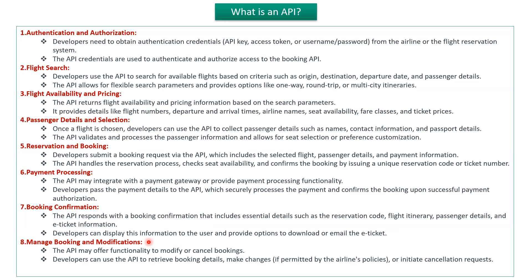The eighth one is the manage booking and modifications API. This API offers functionality to modify or cancel bookings. Developers can use this API to retrieve booking details, make changes, or initiate a cancellation request.